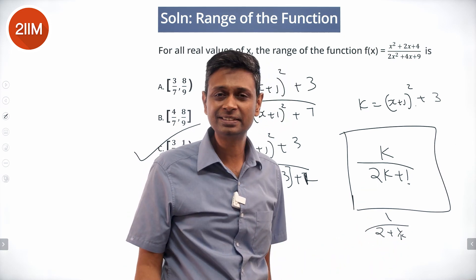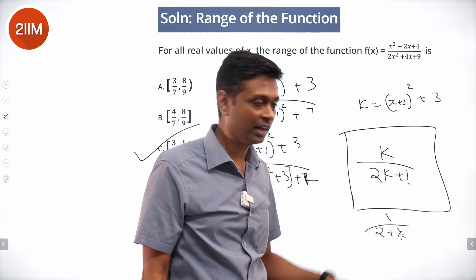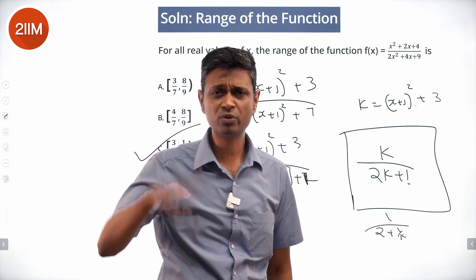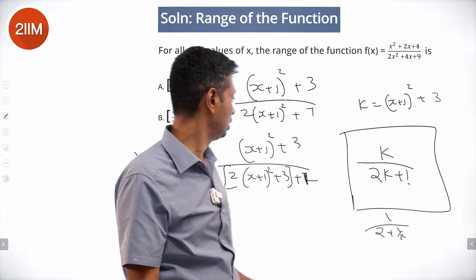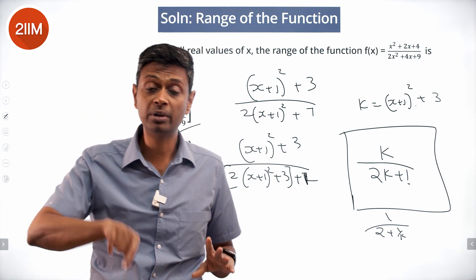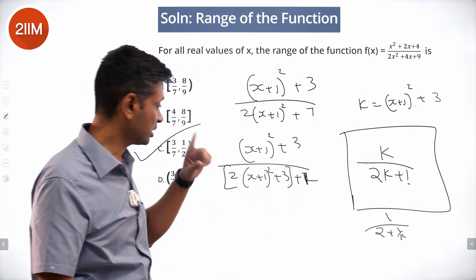So the smallest value k can take is 3. Put 3 there, you will get the smallest value of the expression. Largest value it can take is infinity, or as close to infinity as possible, which can be 1 by 2. It can be 3 by 7. It cannot be 1 by 2. 3 by 7 to 1 by 2.